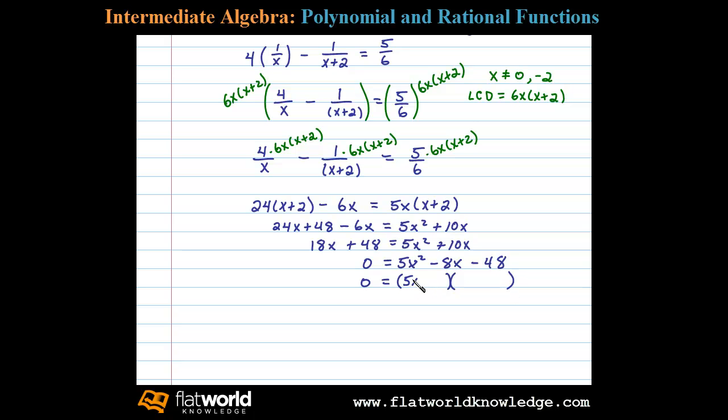We'll use 5x and x. 48 factors as 4 times 12, so if we place the 4 here and the 12 there, we'll have a 20x and a 12x.